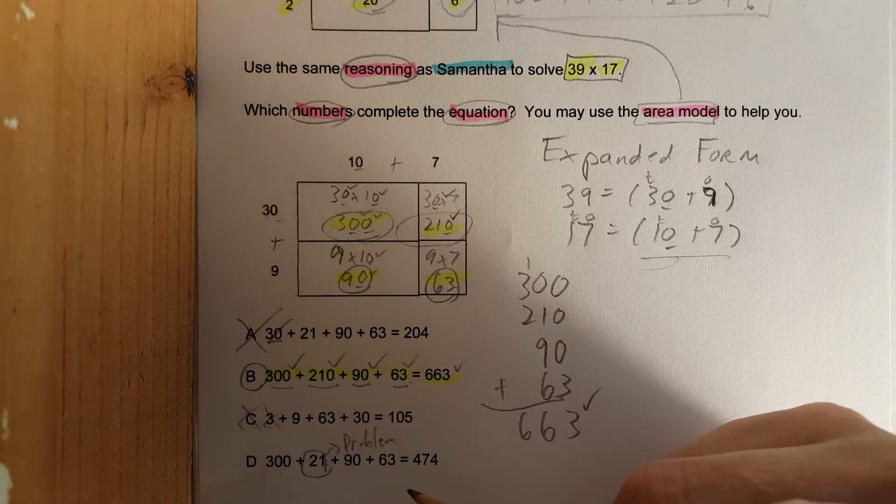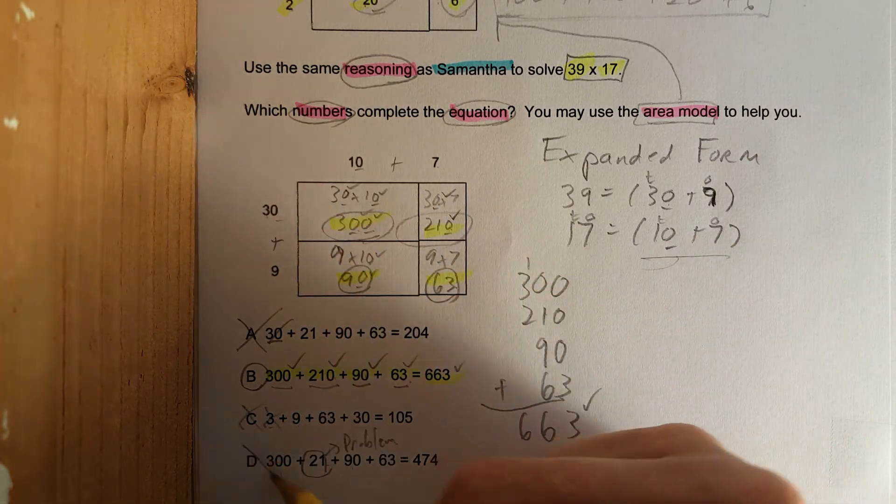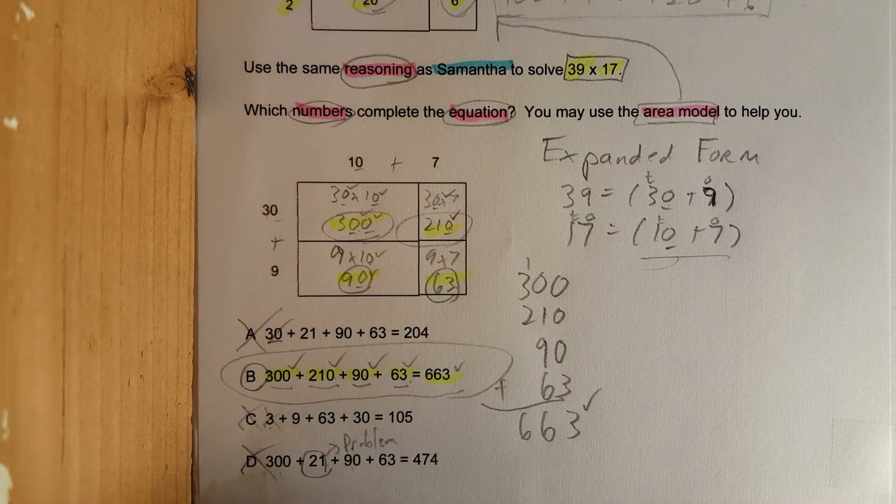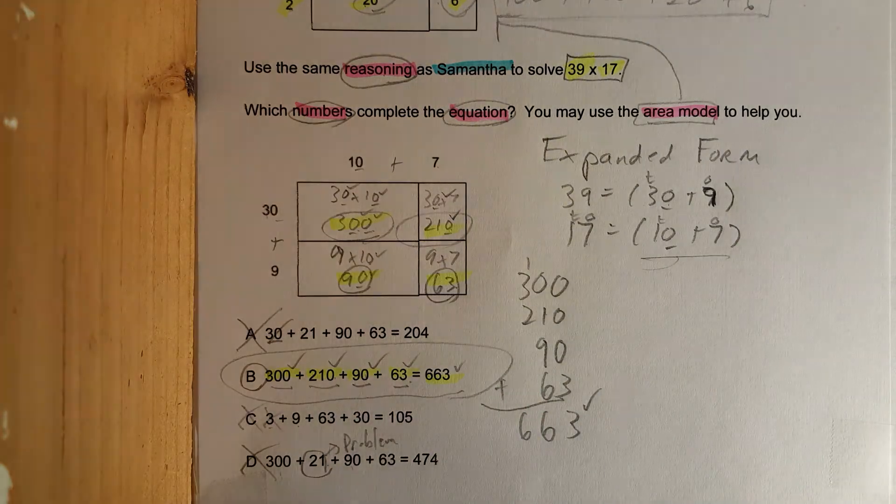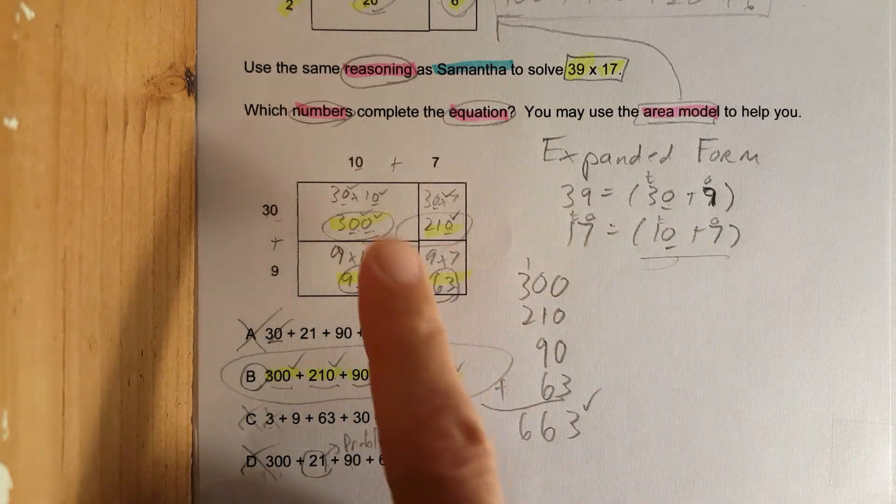There it is, 7 times 30 is 210, not 21. So we know the correct answer is B. Hope that helps, enjoy, have fun, keep practicing area model. Remember, always expand it, show your work, don't cut any corners.